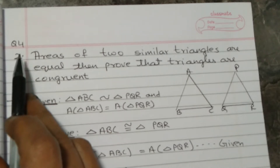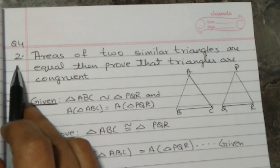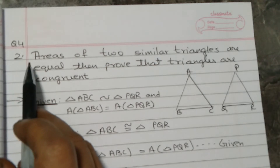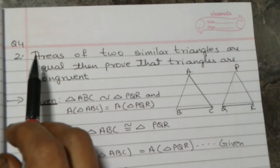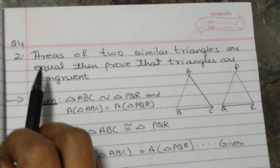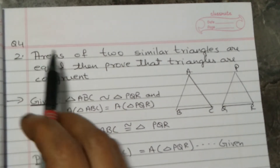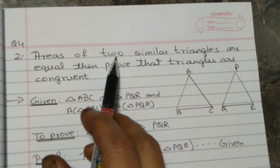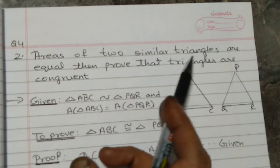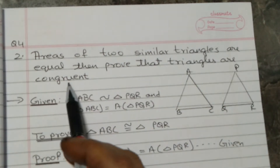Question number 4, second sum: areas of two similar triangles are equal — then prove that the triangles are congruent.